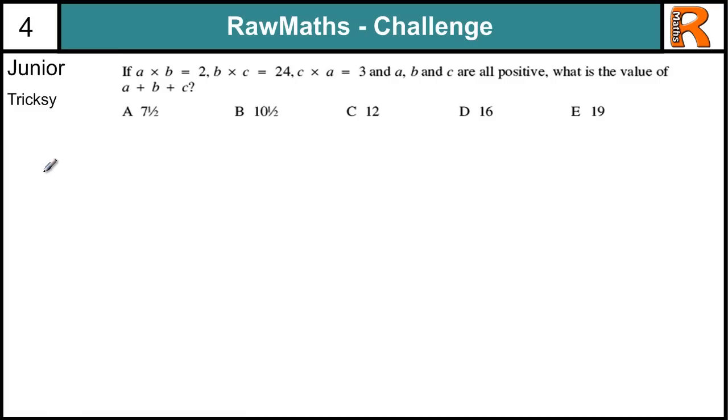Junior tricksy from last week's maths challenge, maths challenge number 3. We are told that a times b equals 2, b times c equals 24, and c times a equals 3. Now there is a clever way of solving this one, but let's just try and do it the brute force way. They are all positive, as soon as I see that I am thinking, it is not saying they are whole numbers, so they are not saying integers, so maybe they are not whole numbers. Let's just try some values.